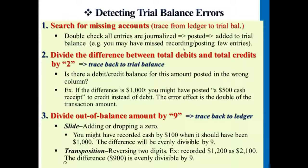The difference here is $1,000 minus zero, which gives you $1,000. This is the total balance difference between debits and credits. If you divide this dollar amount by two, this gives you $500, which is exactly the dollar amount of the transaction that has the error.